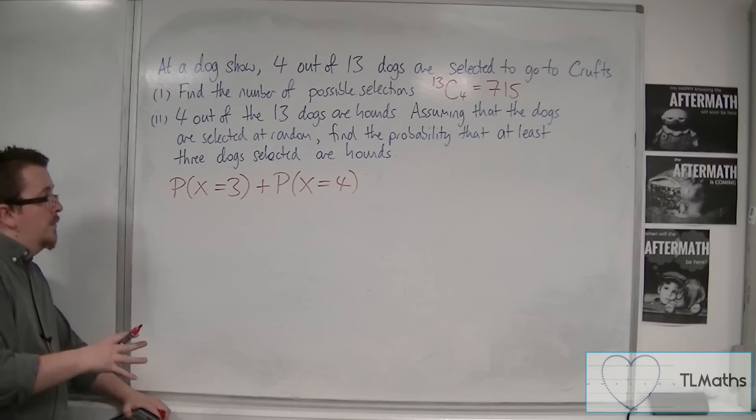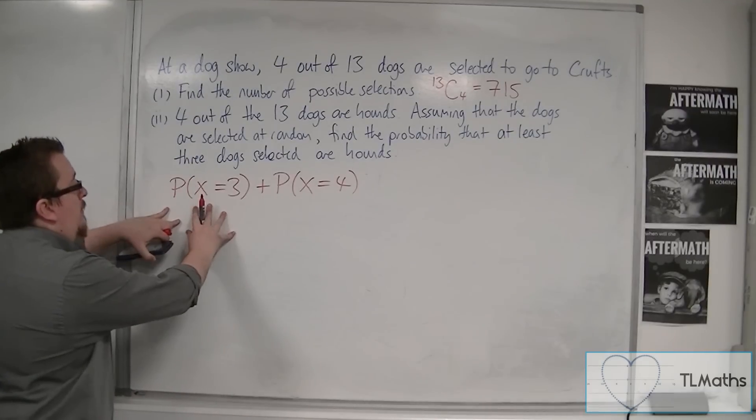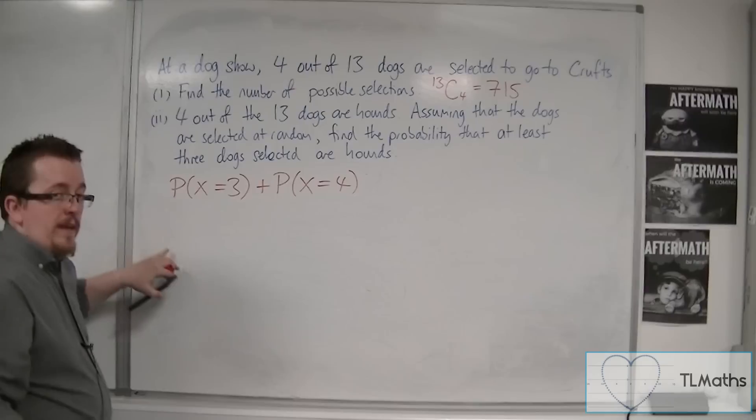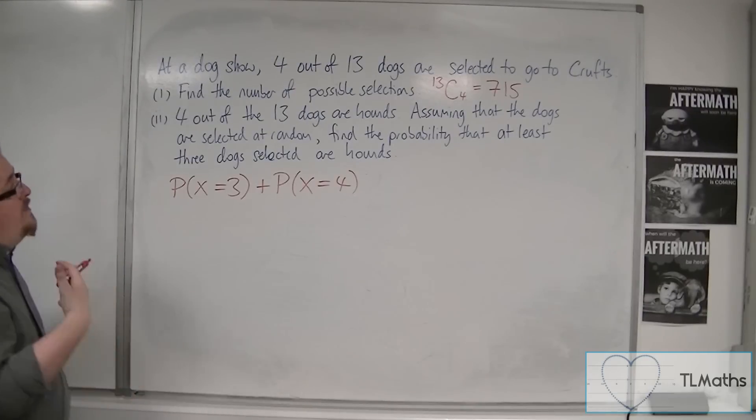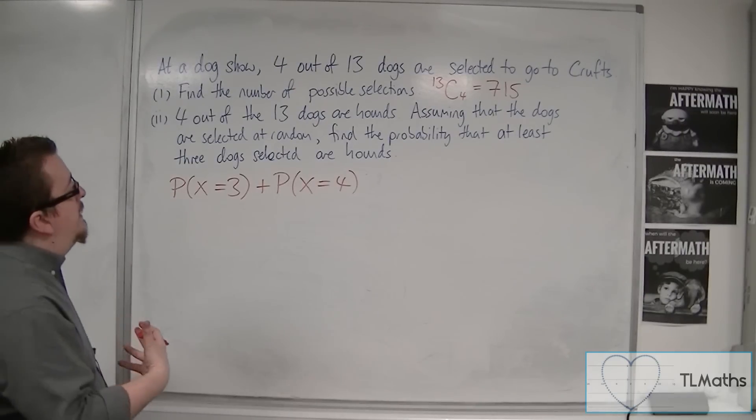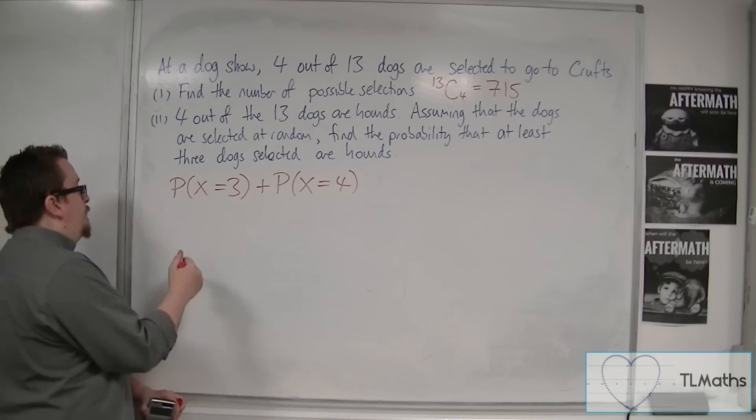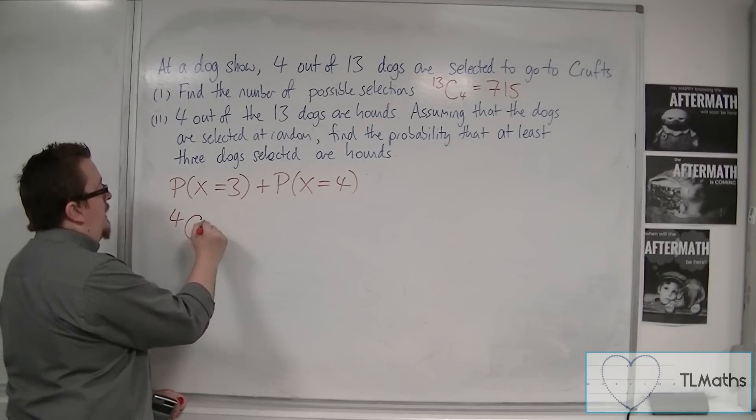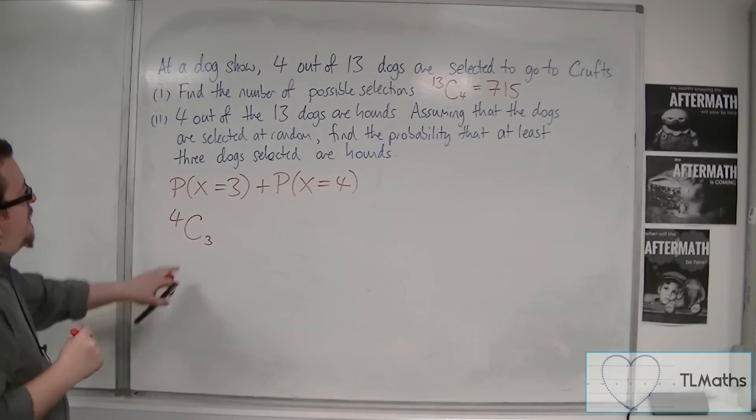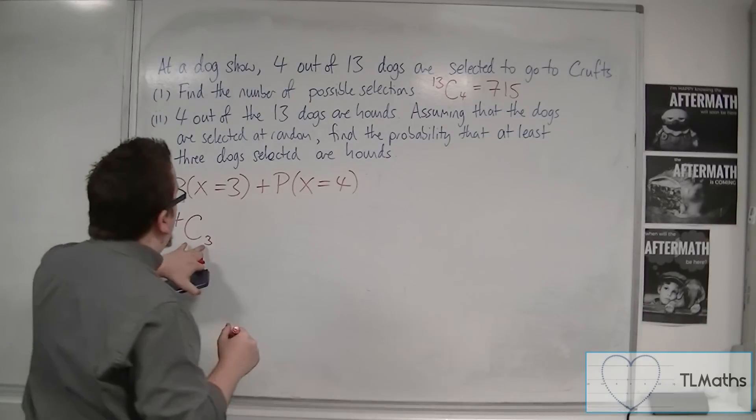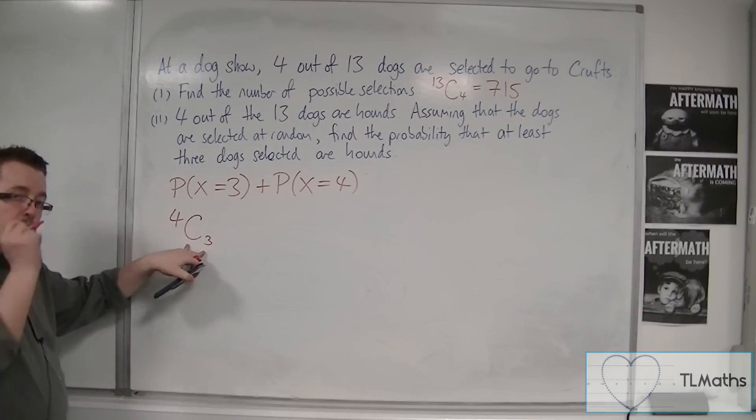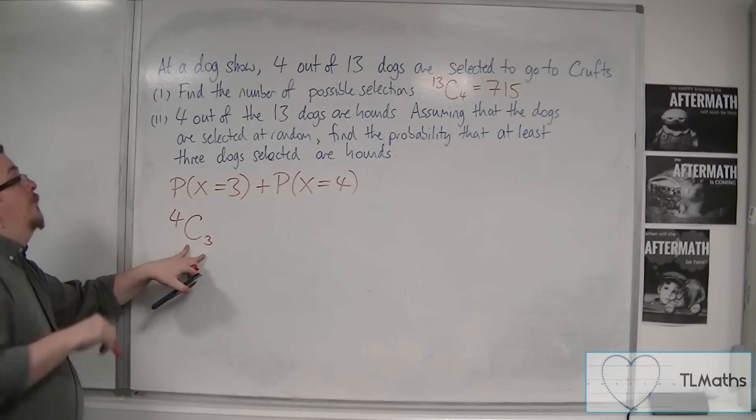To work out the probability of X being equal to 3, we need to know the number of ways of picking 3 hounds out of the 4. So, we need 4 NCR 3. That tells you how many ways that we can pick 3 hounds out of the 4.